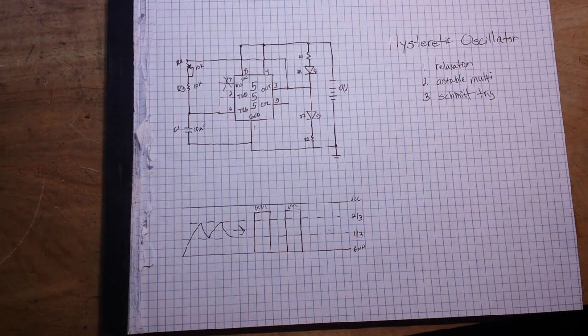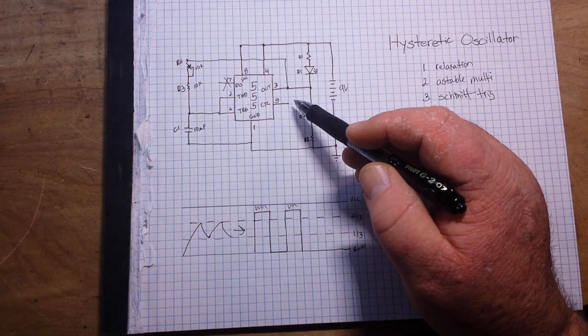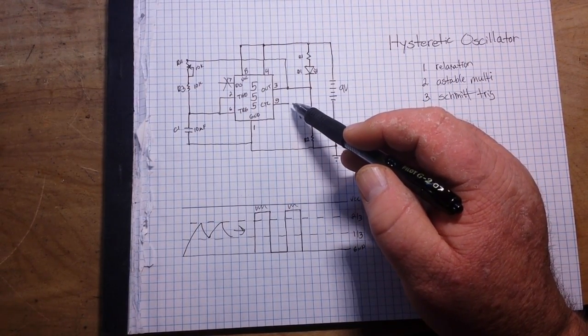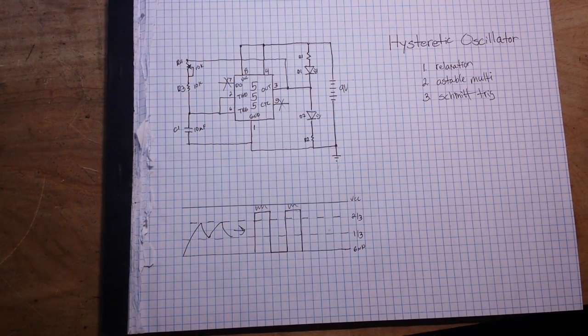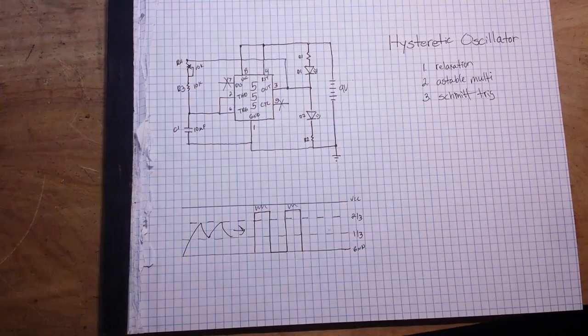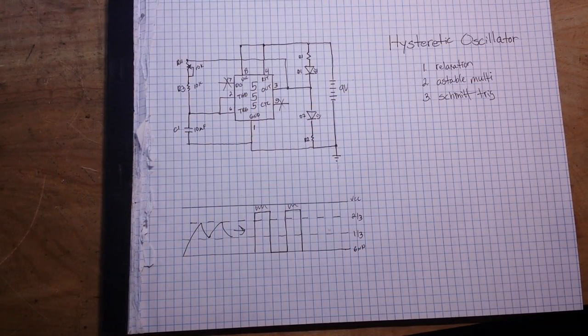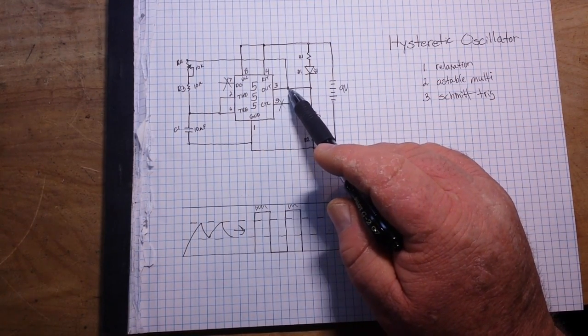In this case, our discharge pin 7 is left disconnected. Pin 2, our threshold, is connected to pin 6, like it is in all of our 555 oscillators. Now pin 5, our control pin, is also left disconnected. I forgot to write reset up here—our reset is held high.